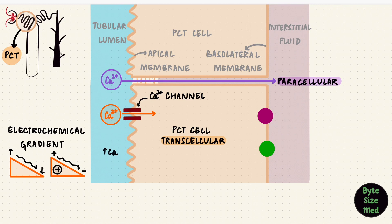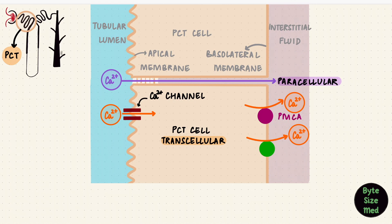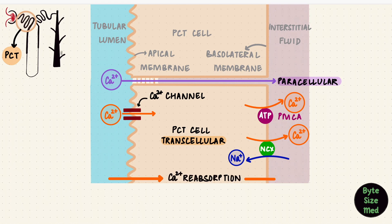Here in the proximal tubule, the lumen has a higher calcium concentration. And for the electrical part of the gradient, the inside of the cell is more negative than the lumen, so this gradient moves calcium into the cell. That calcium is then pumped out of the cell by active transport into circulation. There are two important transporters: the plasma membrane calcium ATPase pump, which uses ATP to move calcium against its gradient, and the sodium-calcium exchanger, which exchanges sodium for calcium. So transcellularly, calcium has been taken up from the tubular fluid and reabsorbed.